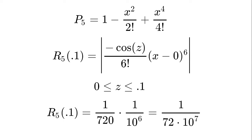All right, so now here at the top we have the fifth degree Maclaurin polynomial for cos(x) written out, which is equal to 1 - x²/2! + x⁴/4!.